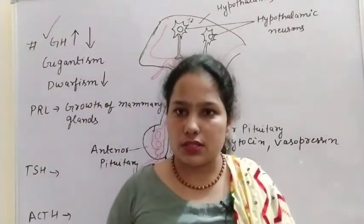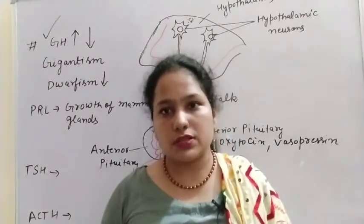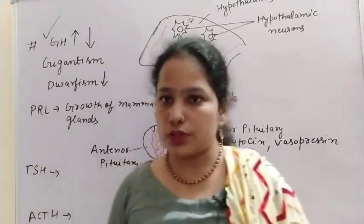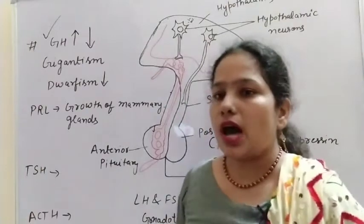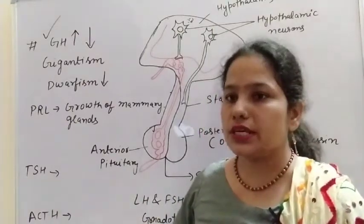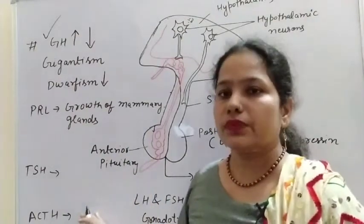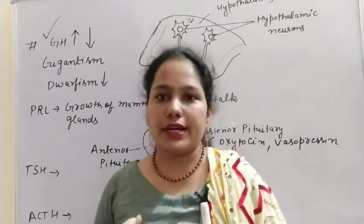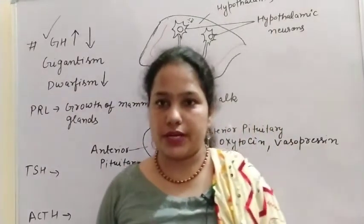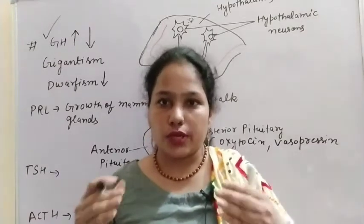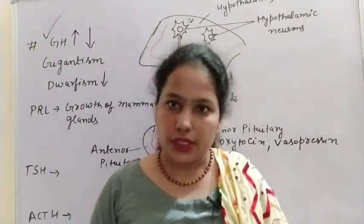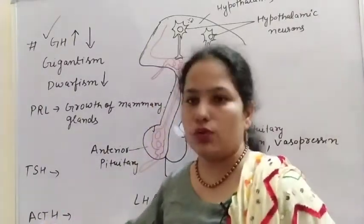Next is TSH — thyroid stimulating hormone. It is very clear from the name: it stimulates the thyroid gland to release its hormones. After that, ACTH — adrenocorticotrophic hormone — is released from the anterior pituitary and stimulates the adrenal gland to release its hormones, such as glucocorticoids, mineralocorticoids, and cortisol.